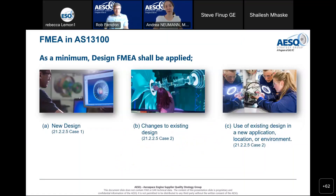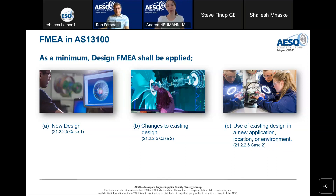The first question is: when should we do the Design FMEA? AS13100 recommends it for a new design — where you can look at functions and processes — but also when you have changes to an existing design, so you can assess how the criticality and behavior of the system changes. It is also proposed for an existing design in a new application, location, or environment, since the criticality of some features may change in that context.